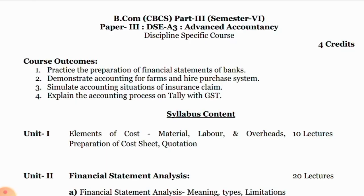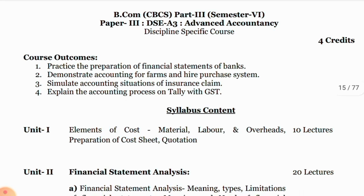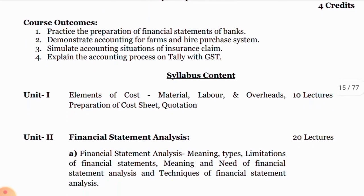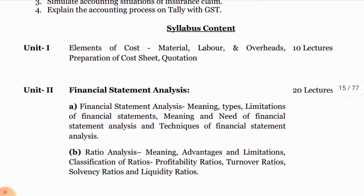BCom Part 3rd, Semester 6, Advanced Accountancy, Paper 3rd. Syllabus content: Unit 1 — Element of Cost, including chapters on material cost, labour cost and overheads, and preparation of cost sheet and quotation.